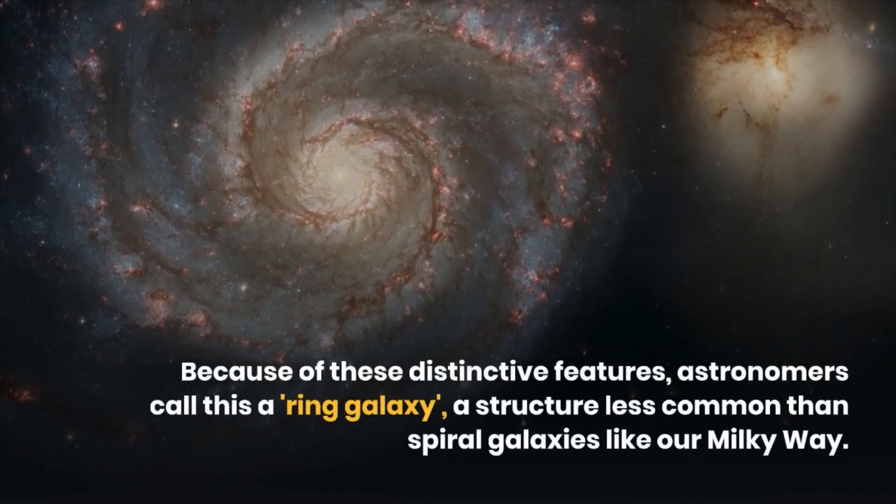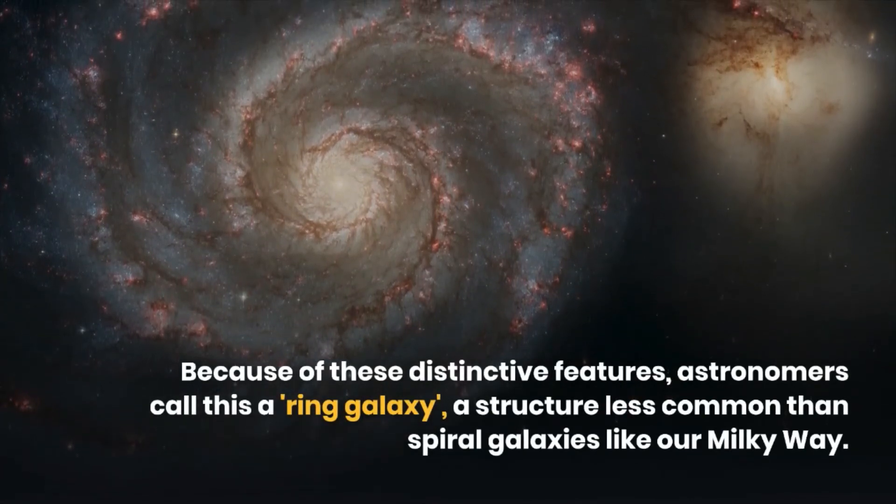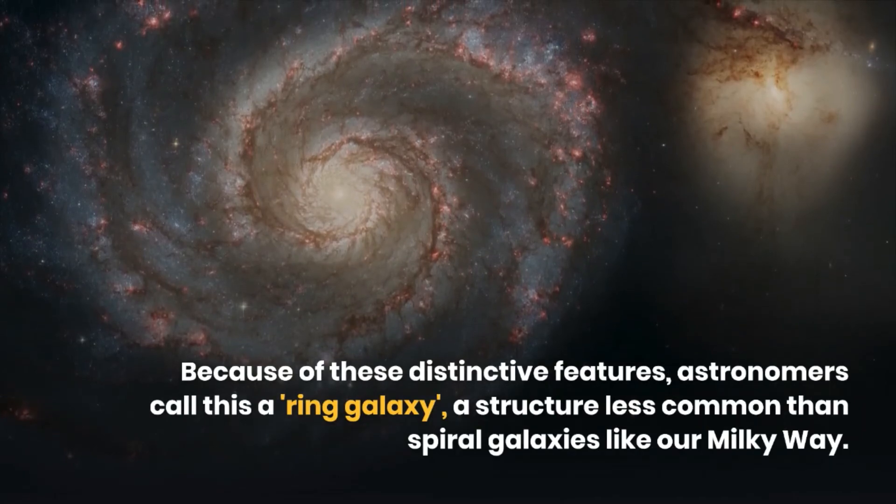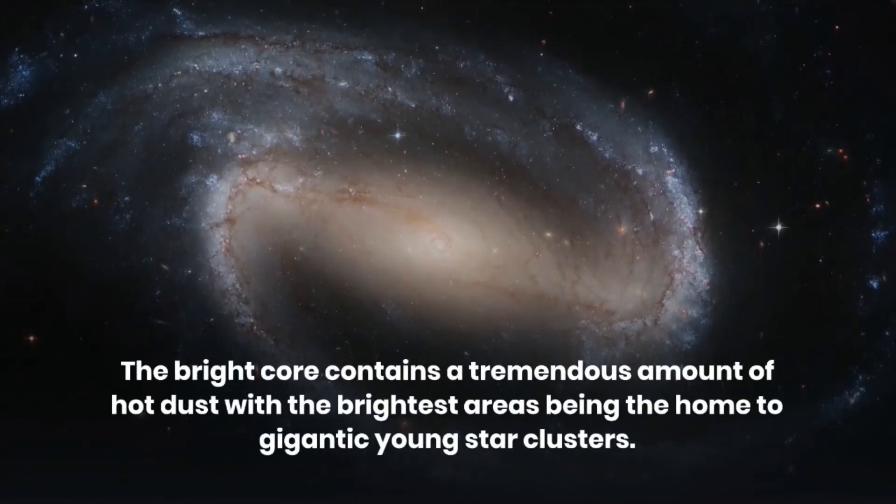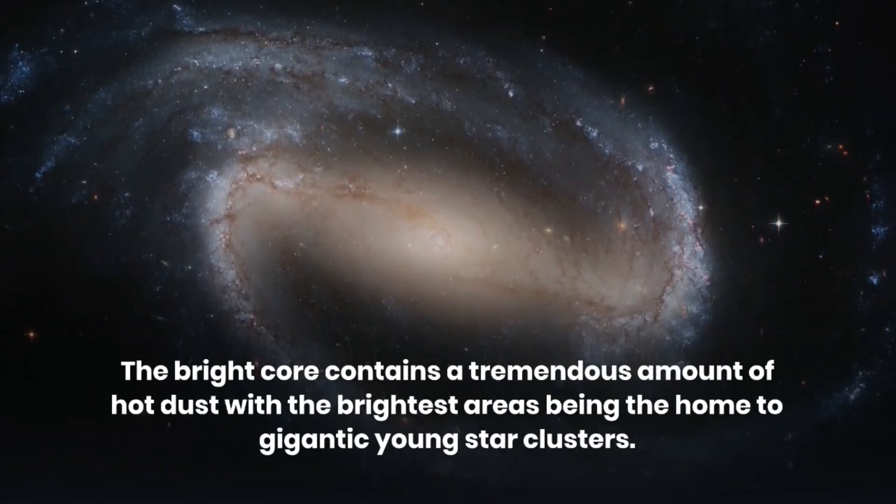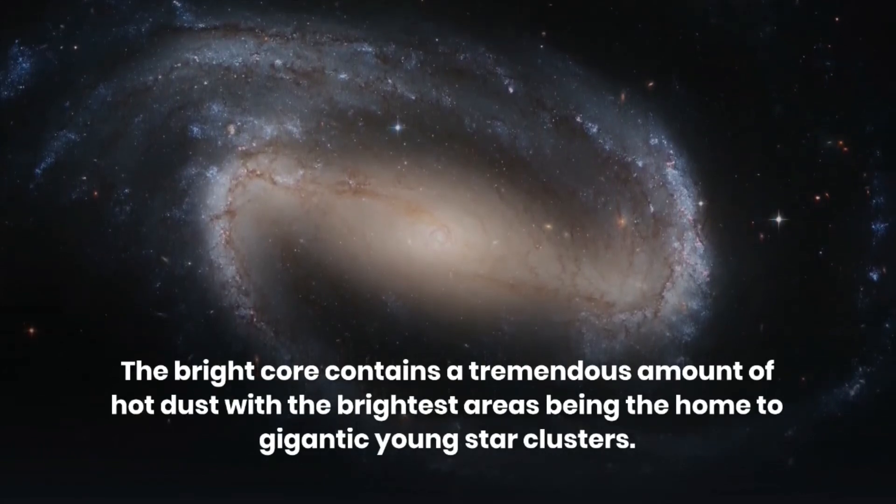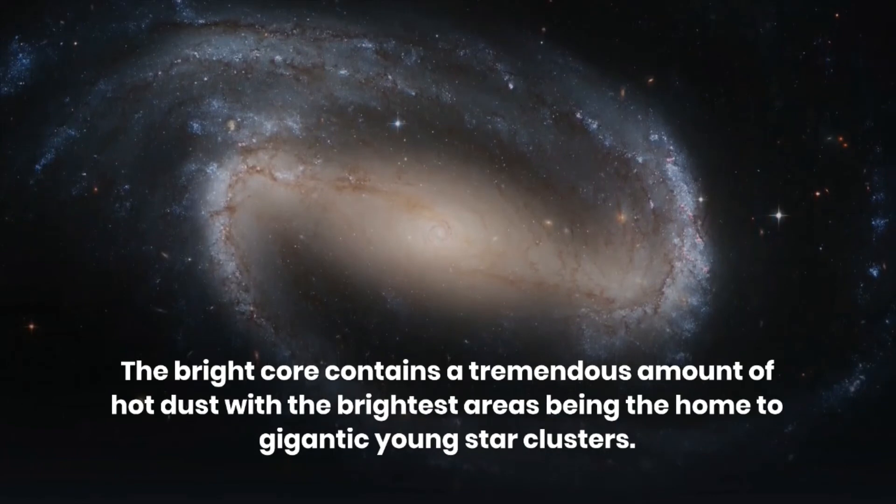Because of these distinctive features, astronomers call this a ring galaxy, a structure less common than spiral galaxies like our Milky Way. The bright core contains a tremendous amount of hot dust, with the brightest areas being the home to gigantic young star clusters.